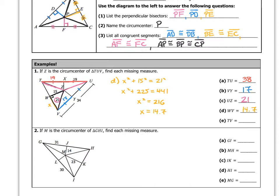Finally, part E asks us to find TV, which is just double the length of WV. Since WV is 14.7, TV would be 29.4.